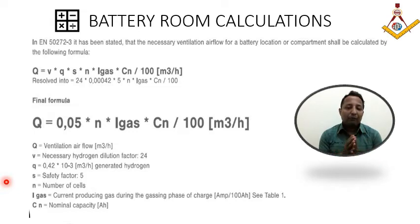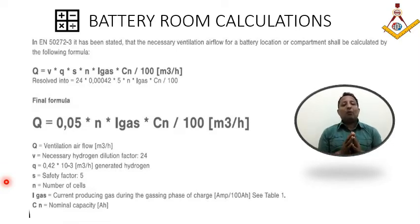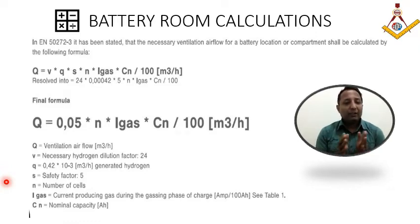This entire battery room calculation, along with an example, I will be covering in a subsequent session. But for now, to understand what the battery room is and how the ventilation normally happens, this formula as per EN 50272-3 is being considered here.